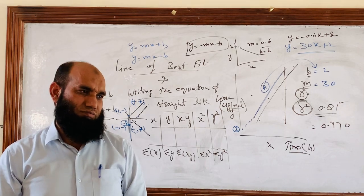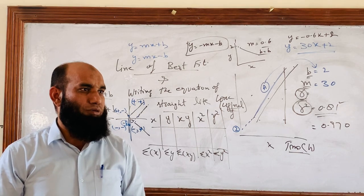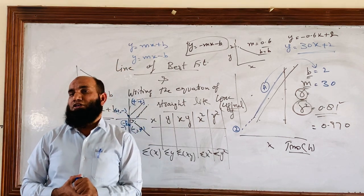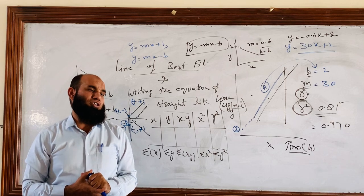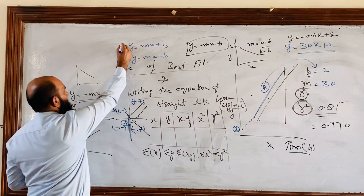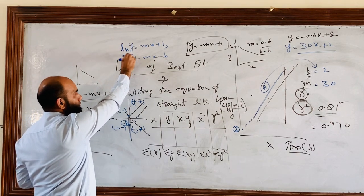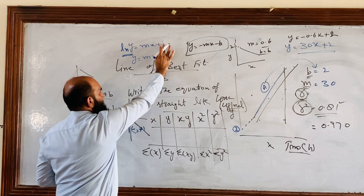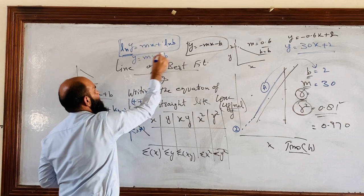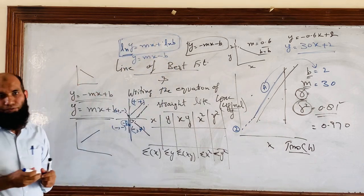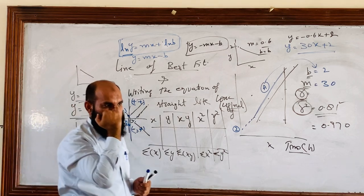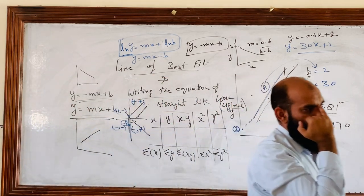What about the semi-log graph? Would the equation be same or different? Different. Now we have to write the word log or natural log. The equation would be the same structure, but we will write ln y equals mx plus ln b. In case of semi-log graph, the equation will be changed and we will write the word log or natural log.